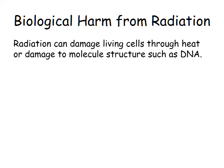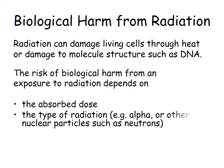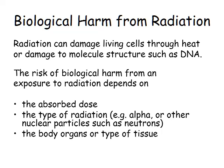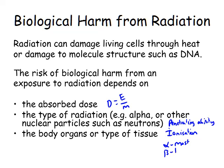There are three things the biological harm depends upon. First, the absorbed dose — that's energy divided by mass. Second, the type of radiation: is it alpha, beta, or gamma? The different types have different penetration abilities, but mostly they have different amounts of ionisation. Alpha is the most ionising, beta is less ionising, and gamma is the least. So if everyone received the same absorbed dose, the harm from alpha would be the greatest.